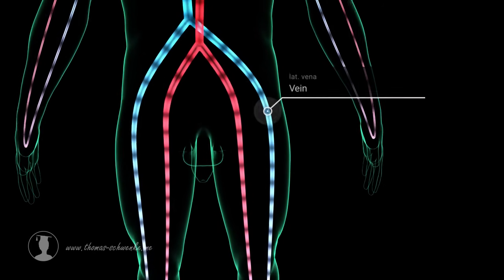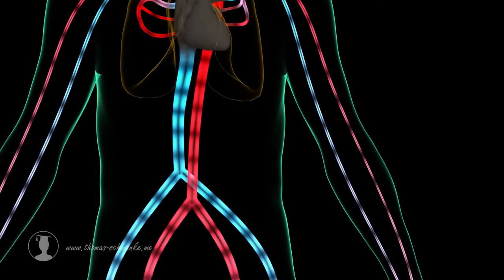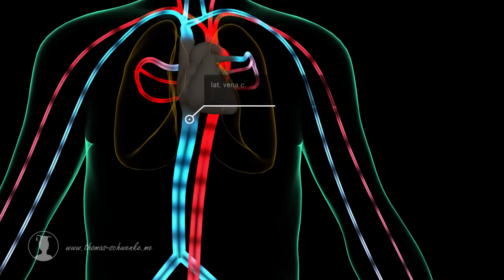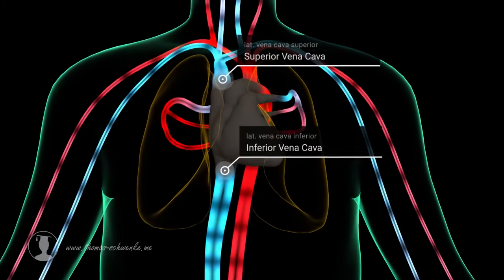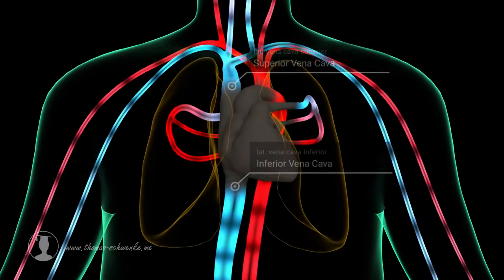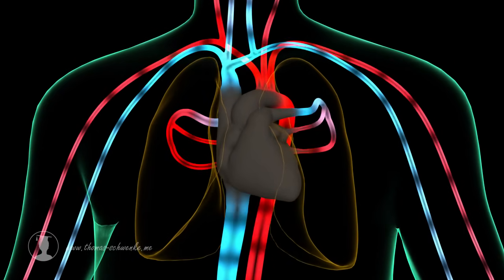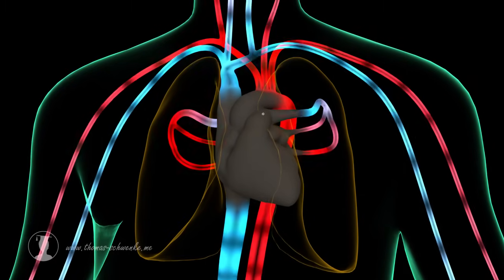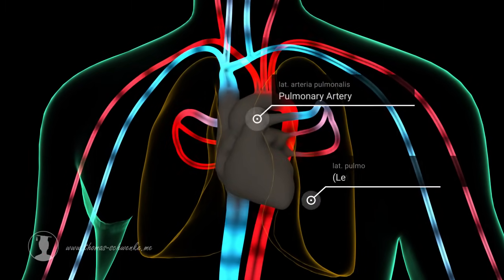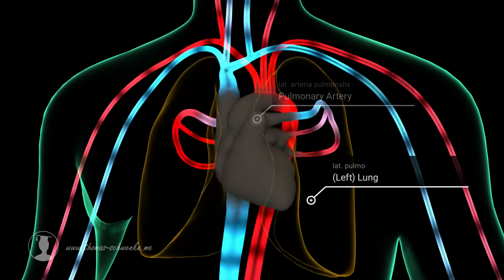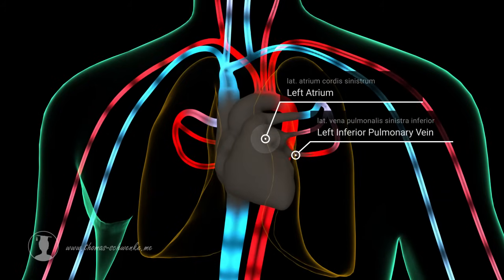The returning blood reaches the right atrium of the heart via the inferior and superior vena cava, and from there into the right ventricle. The right ventricle then pumps the deoxygenated blood into the lungs with the help of the pulmonary artery. Here, the blood absorbs oxygen, enters the left atrium, and finally returns to the left ventricle and the aorta.